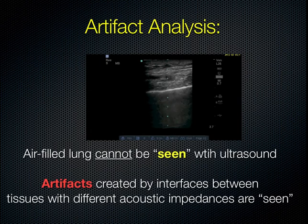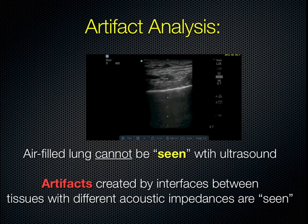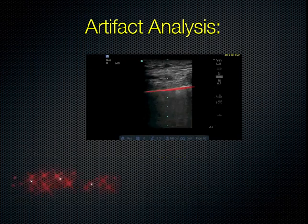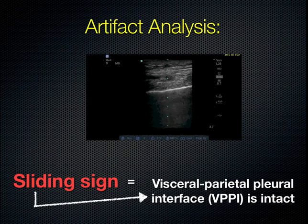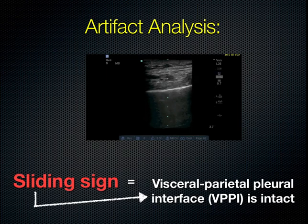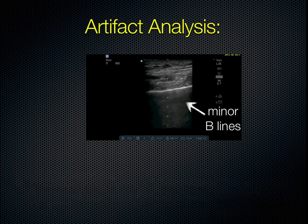Now we're going to use this high-frequency image to analyze artifact. We can't see the lung itself, but we can see the artifact created by the interfaces between tissues with very different impedances, such as the pleural line and lung. Here is the visceral-parietal pleural interface, and what we're seeing is the sliding sign — it tells us the visceral pleura is adjacent to the parietal pleura and they're sliding against each other. You can appreciate very small B lines that show the motion, which looks a bit like ants crawling across or shimmers. There are very minor B lines here and an A line, because this lung is mostly aerated.